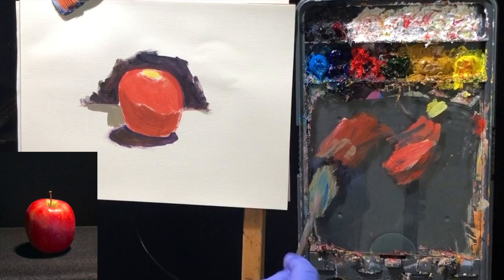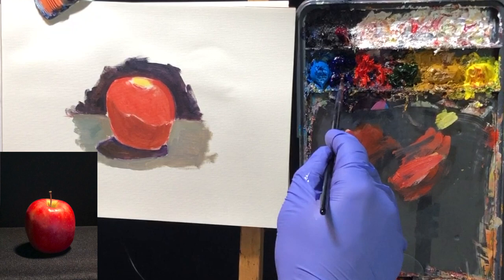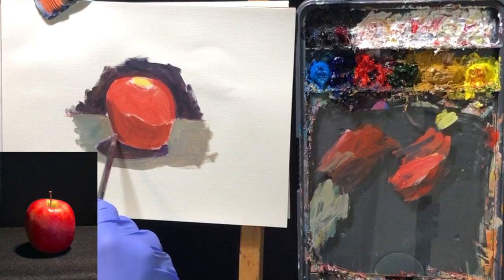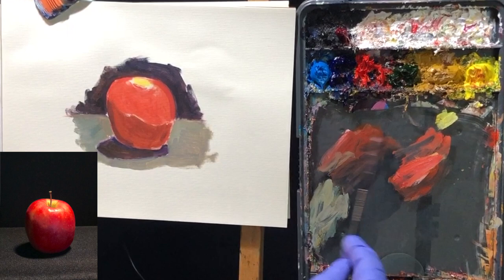I'm just going to put enough there so I know the information that I need to make decisions. So I don't need to bring the background or the table the apple's on all the way to the edges to get what I need to make decisions on colors within the apple.